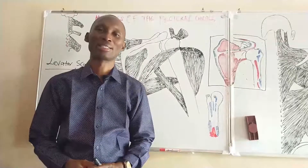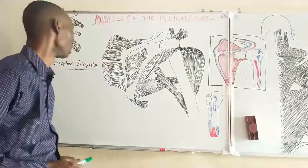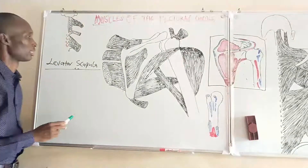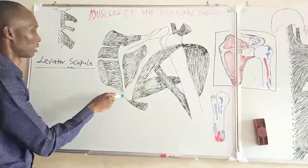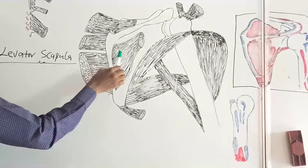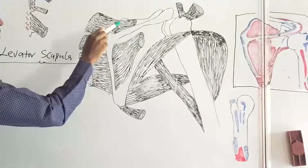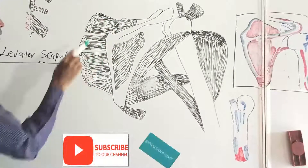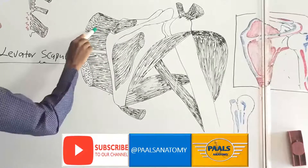We will be looking at the levator scapula. From what we have here, this is the medial border of the scapula and this is the infraspinous fossa with the muscles supraspinatus and infraspinatus. This is the medial border. This is actually the muscle we are interested in — that's the levator scapula.